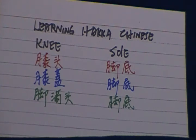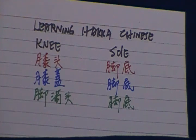Sole of the foot. In Hakka Chinese is Gio Gdai. In Mandarin is Jiao Di. And in Shanghainese dialect is Jia Di. Gio Gdai in Hakka Chinese, Jiao Di in Mandarin, Tecti in Shanghainese dialect.